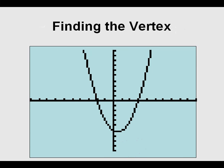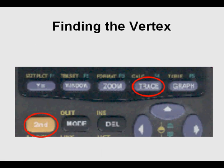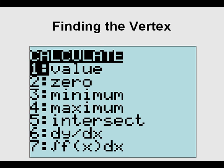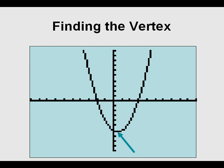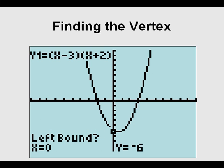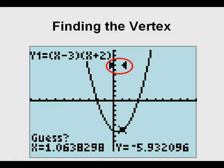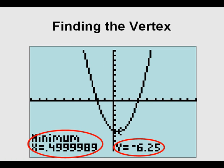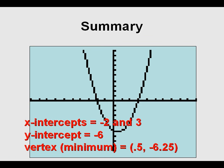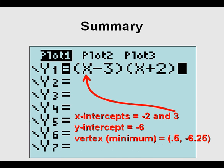Now we're going to find the vertex, indicated by the arrow on screen. We press Second, Trace, and because it's an upward-facing parabola, we go to Minimum — option 3. The cursor is blinking to the left side, so we press Enter to get the inward-facing arrow, then arrow over a few strokes to the right side of the vertex and press Enter again, then Enter a third time. We get a minimum value of x equals 0.5, y equals negative 6.25.